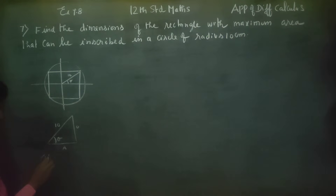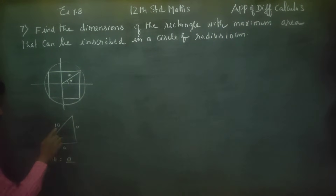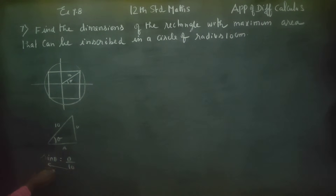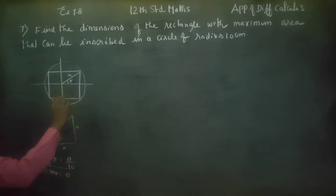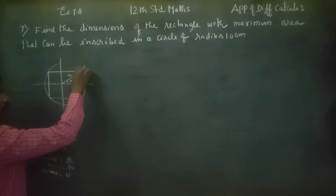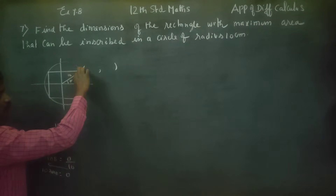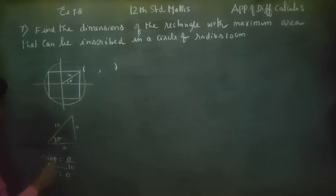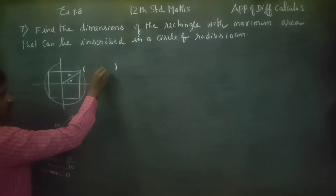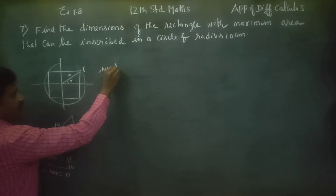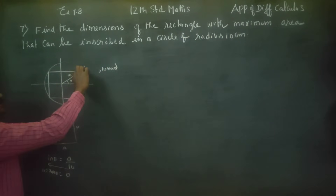What is the sin theta formula? Sin theta is equal to opposite side by hypotenuse. The hypotenuse is 10. Cross multiplying, 10 sin theta equals the opposite side. Therefore, the y-coordinate is 10 sin theta.